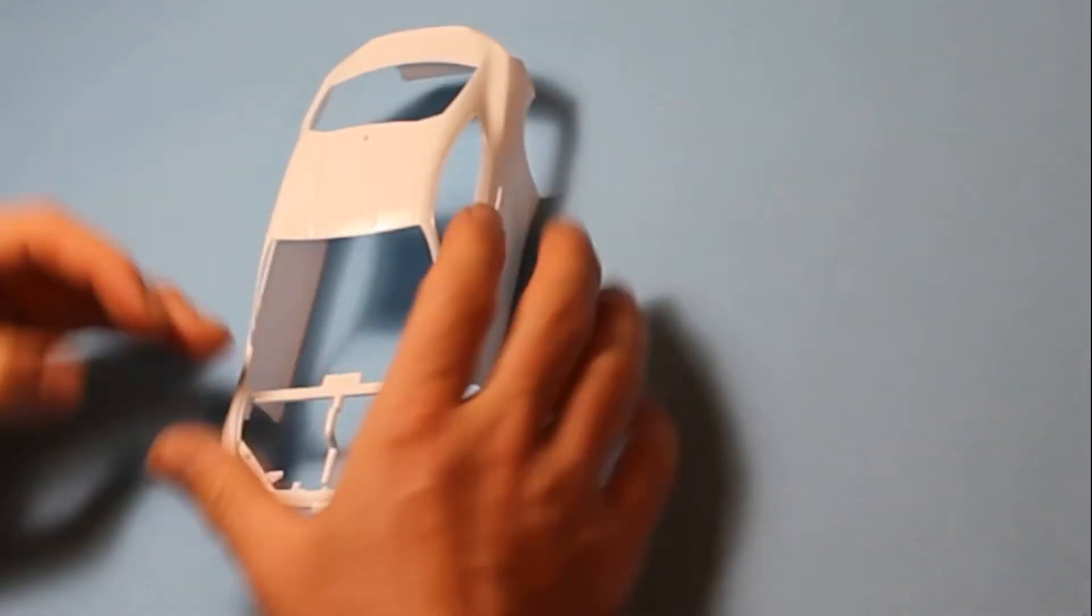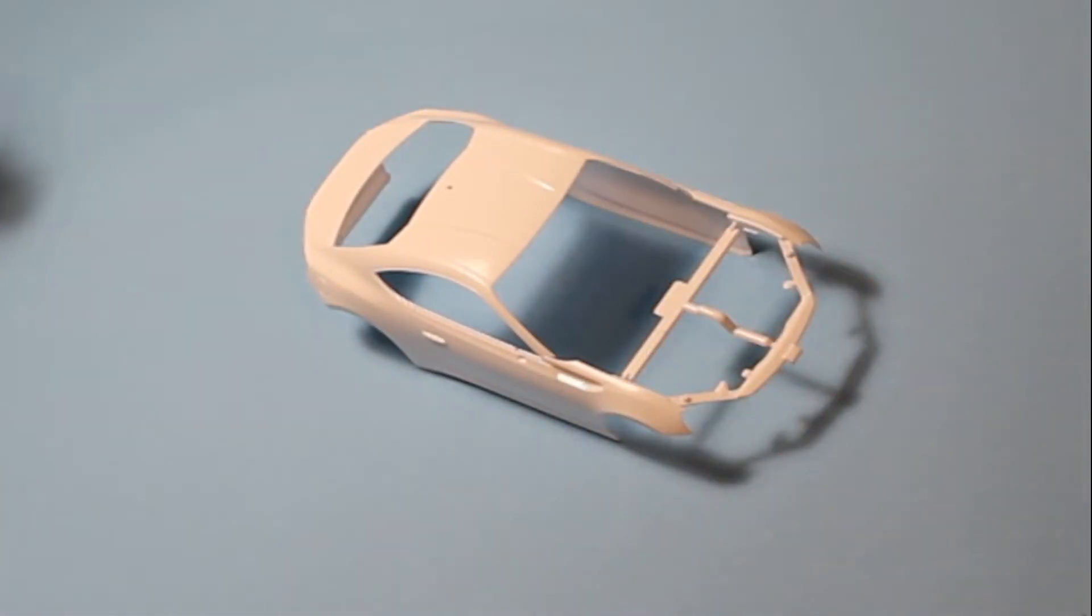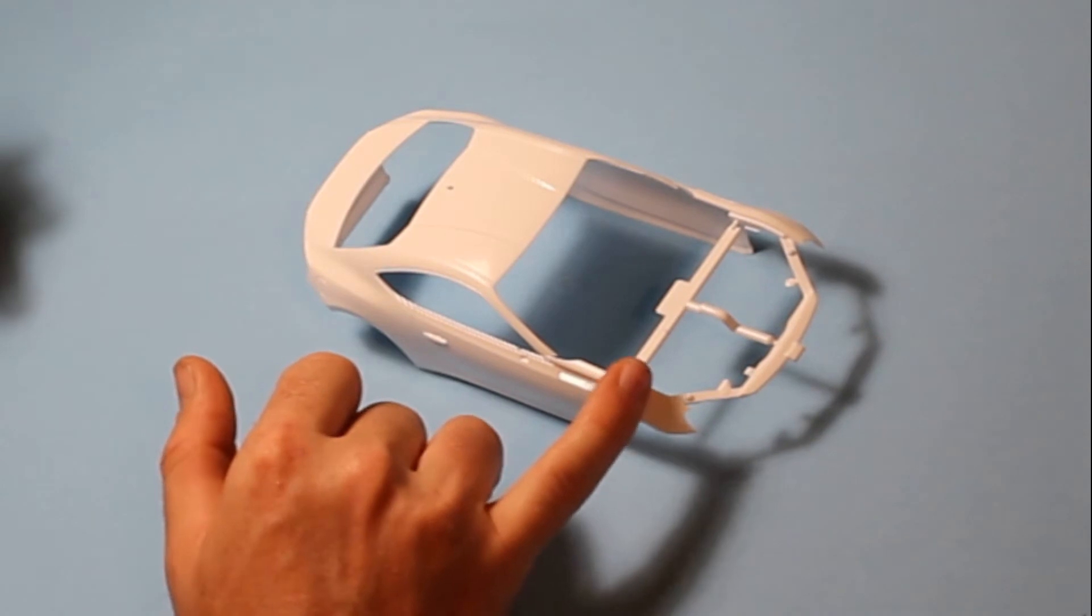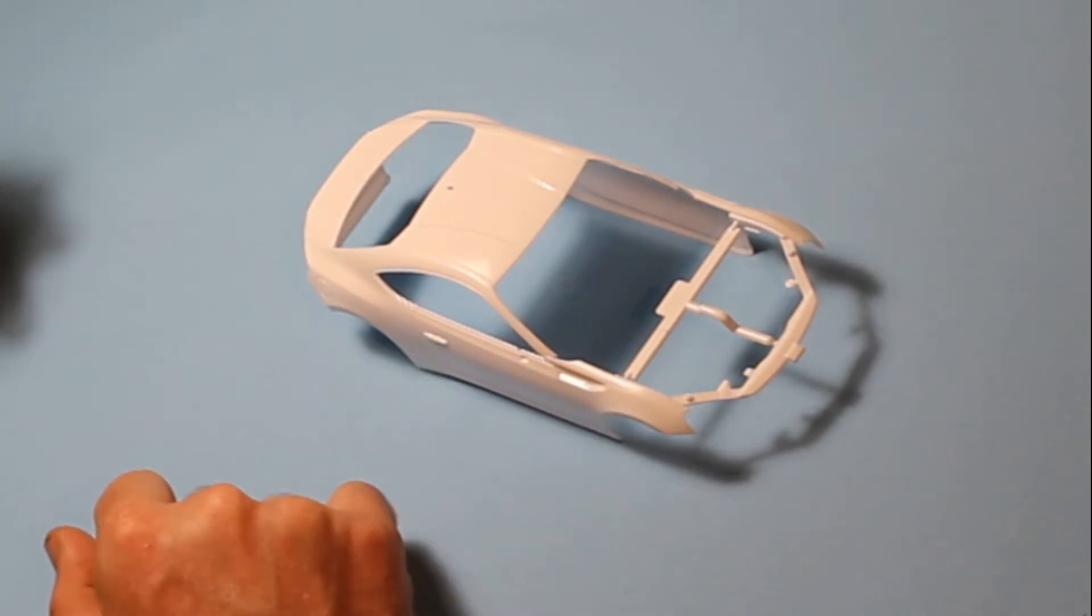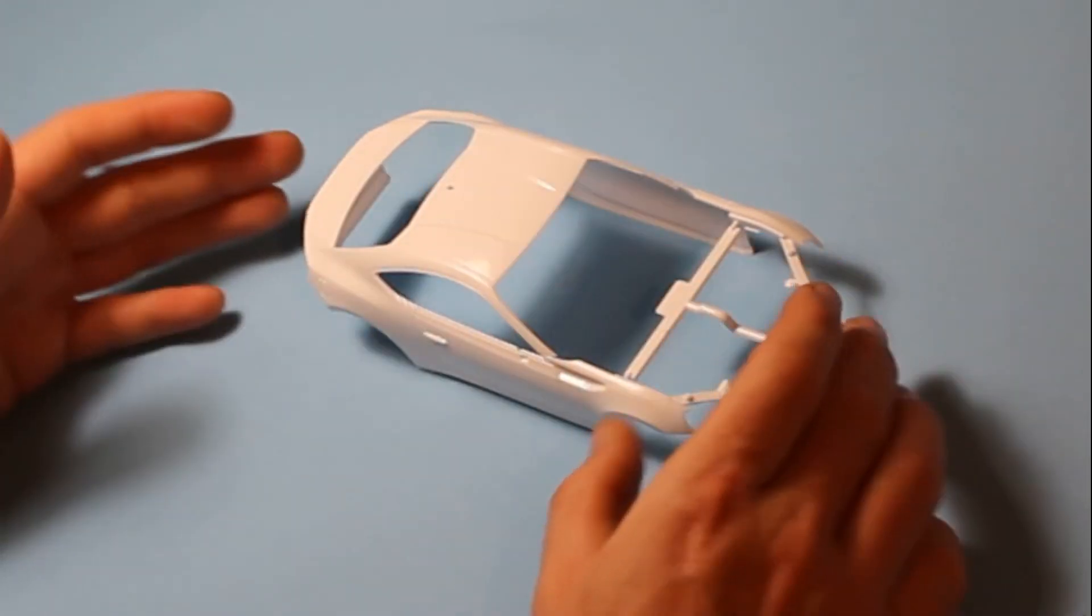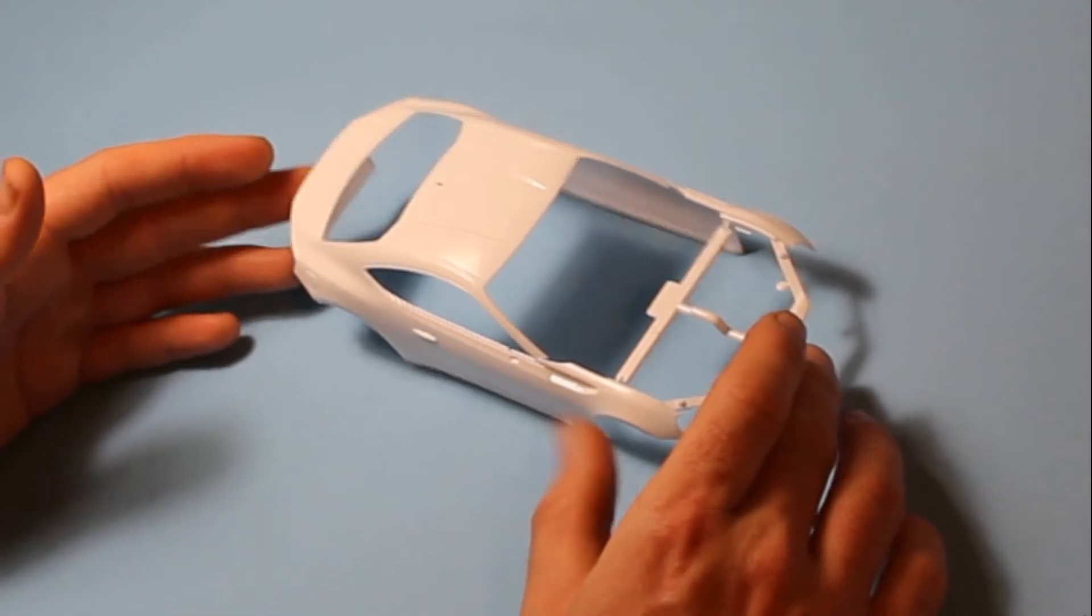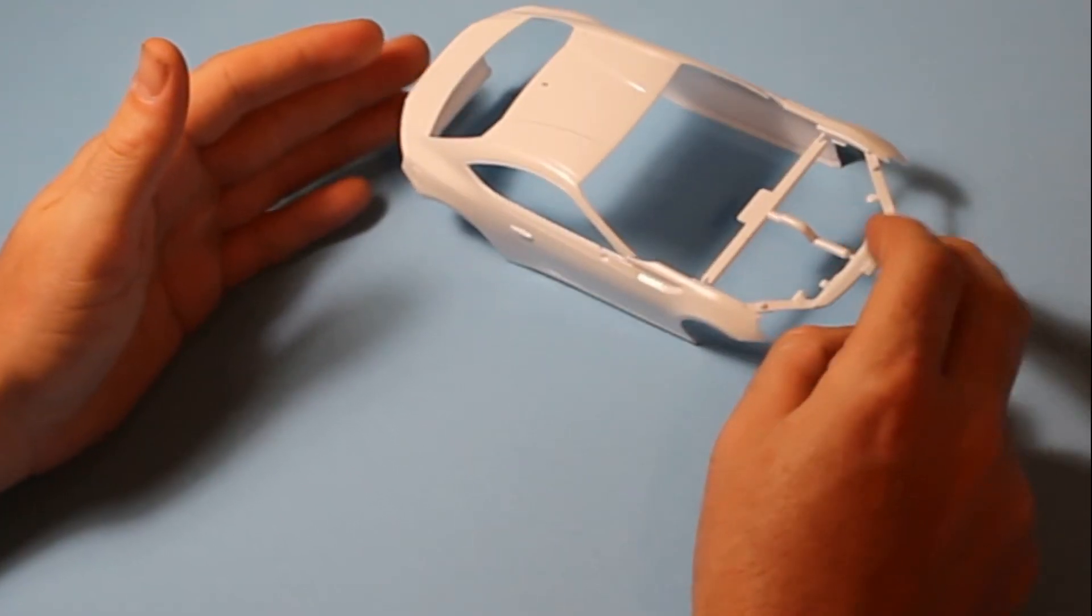So start off with the body, which is one complete shell with a few parts of sprue here just for strengthening, which you remove before continuing with construction. That's a very nice all-in-one piece.